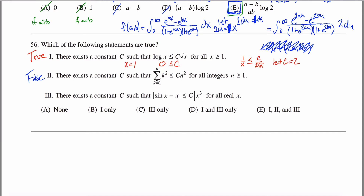You might recognize there's a formula for the sum of squares — it's a very common induction exercise. The sum from k equals one to n of k squared equals n(n+1)(2n+1)/6. If you know that formula, the problem becomes super easy.